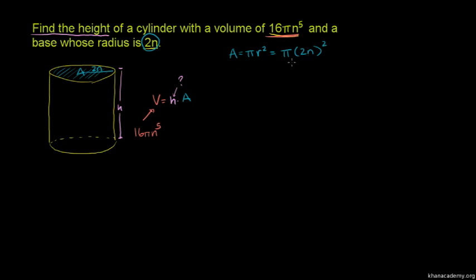and we know this is the same thing. So area is equal to - what if we just rearranged it - area is equal to 4π n squared. So that's the area, that's right over there. And so now we can solve for h.